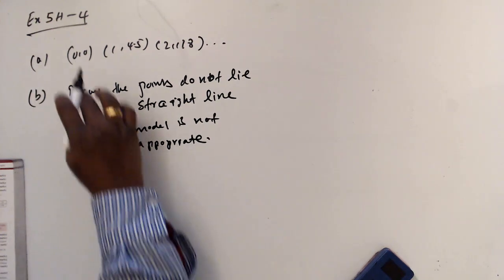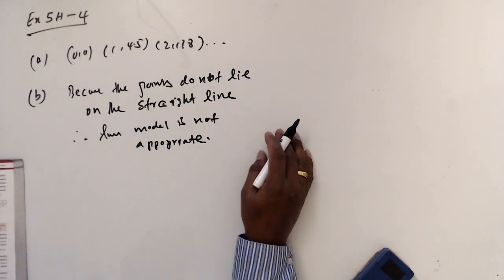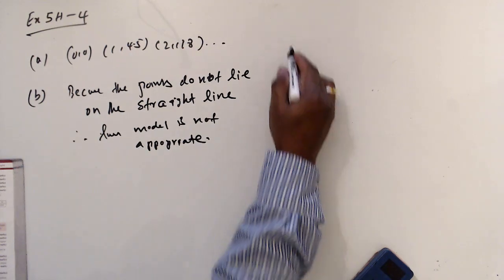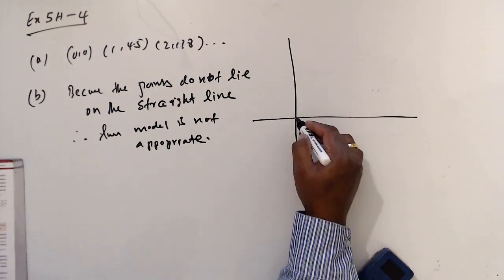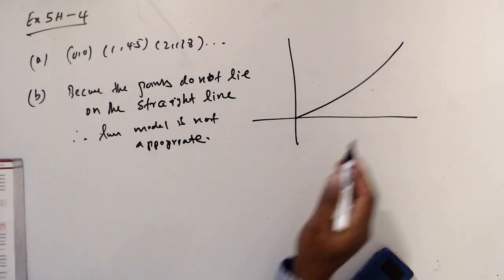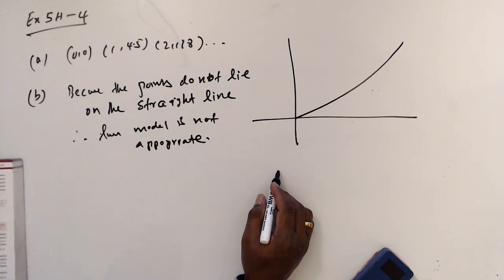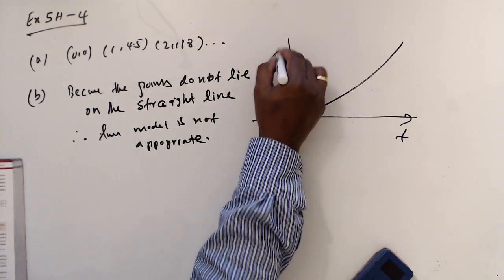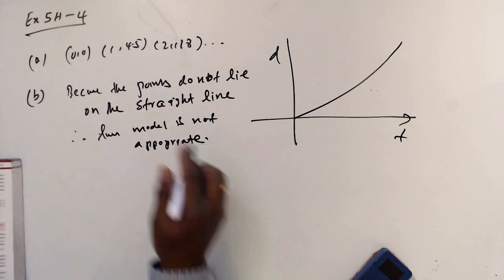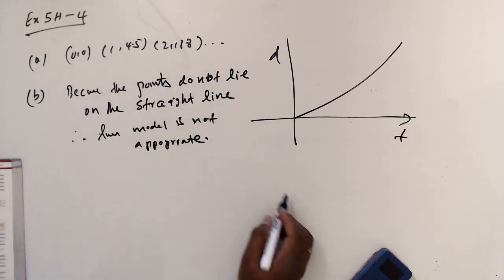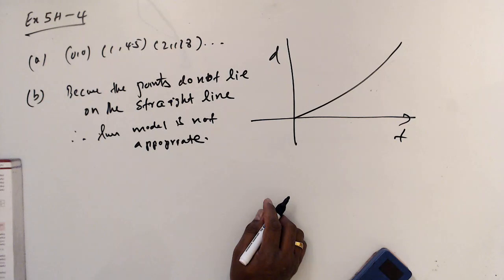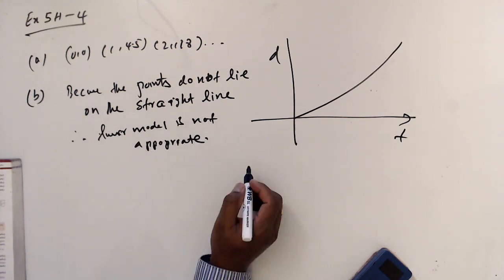Then, when you plot this one, it can't be a line. So, you may get this kind of curve. This is time and this is distance. Points do not lie on the straight line. Linear model is not appropriate.